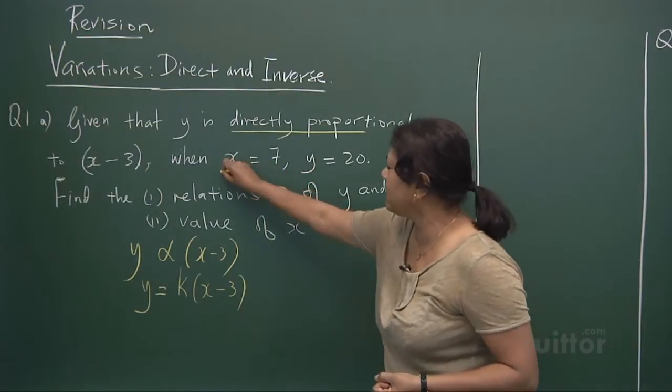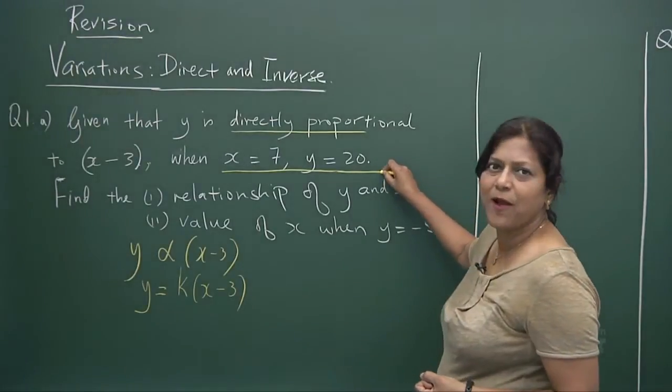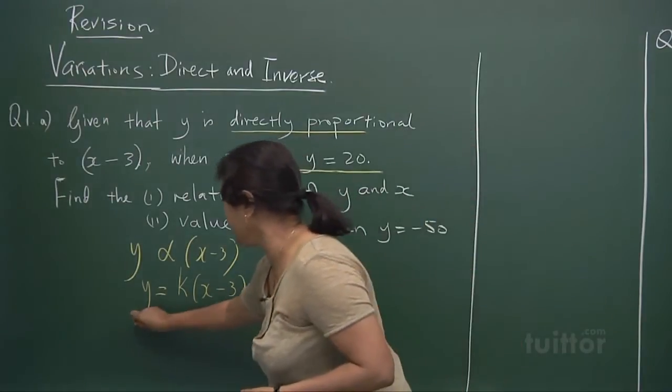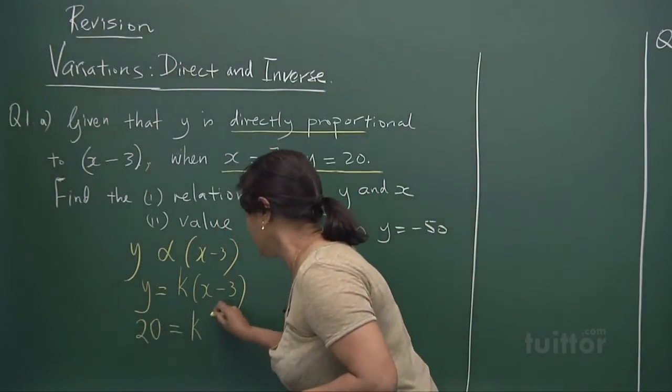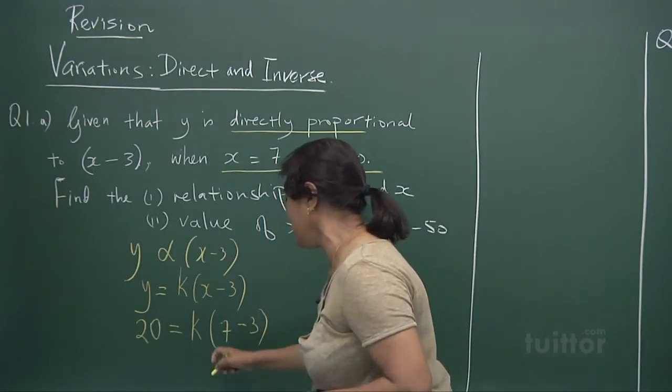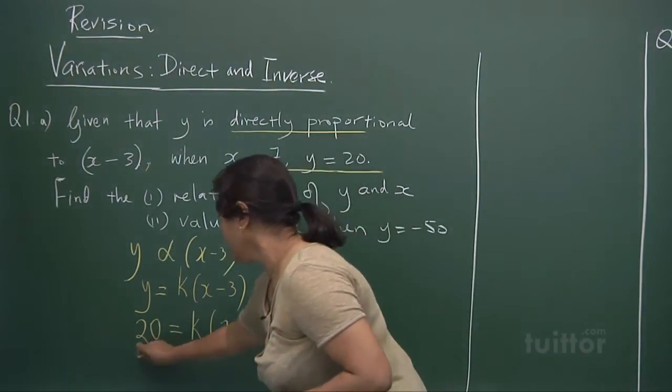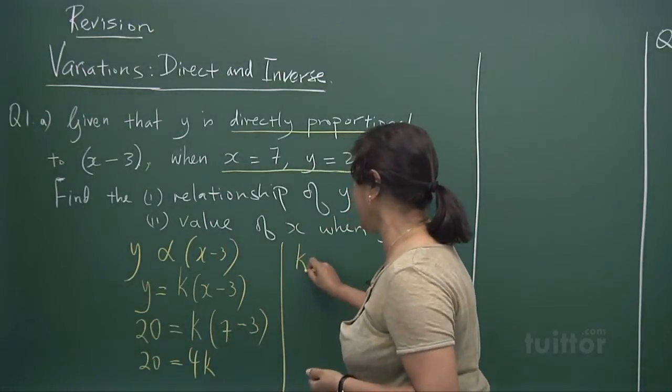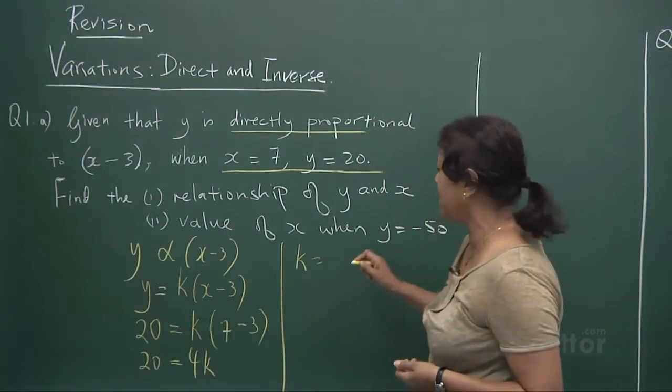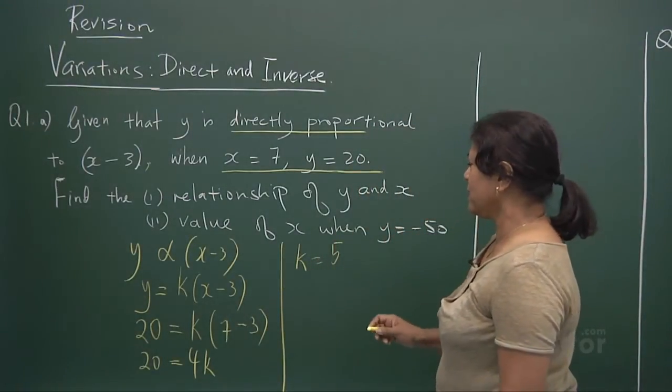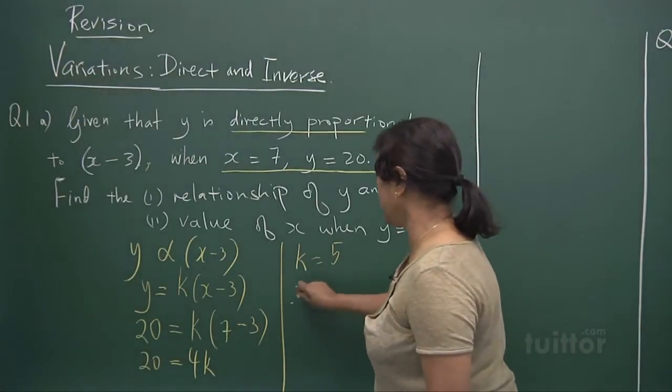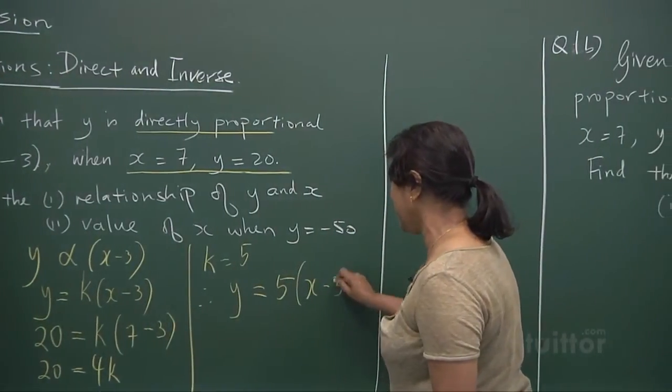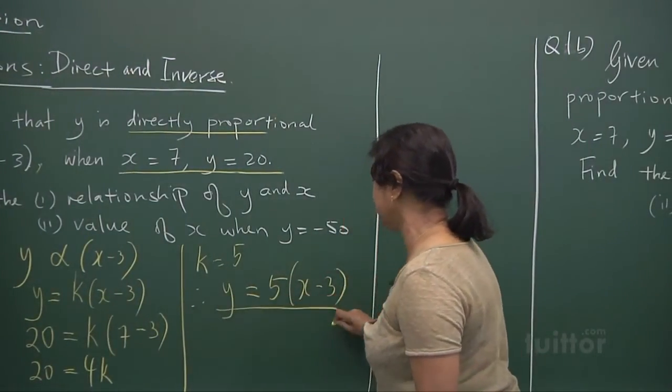When you say the word constant, is it a variable number? It changes? No. It is a fixed value. No matter whatever values that x and y can take, k is a constant. You introduce it to make from a variation into an equation. Now this vital information here will help us to find what k is. When x is 7, y is 20. So you put here 20, x is 7, 7 minus 3. So we can find out that you've got 4k here. 4k is 20. Hence, your k equals to 20 divided by 4, you get a 5. So therefore, what is the relationship? y equals to what? k is 5. It's a fixed value as I have said. And this is the relationship.